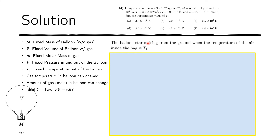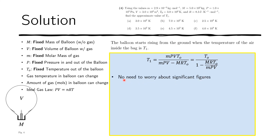Now we compute the actual numerical value of T₁ given specific values. Starting from the expression obtained in the previous question, to reduce computation, we divide numerator and denominator by mPV, simplifying terms. We then substitute all the given numerical values. A useful tip is to first sum all the exponents of powers of ten, then cancel where possible — for example, cancelling the factor of 10³ appearing in both numerator and denominator.